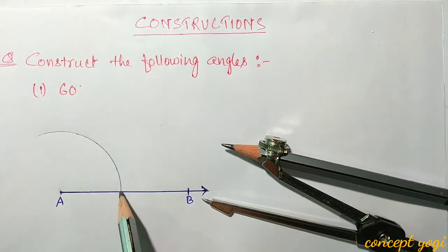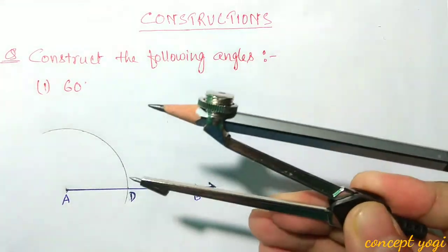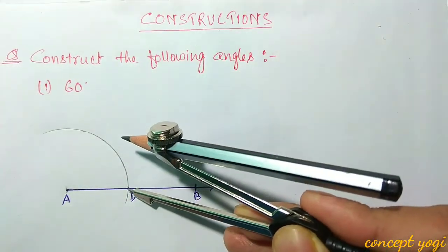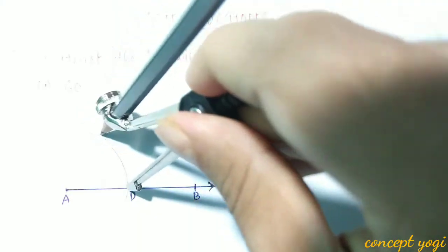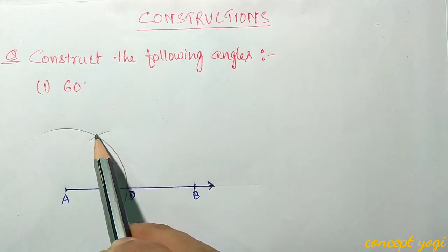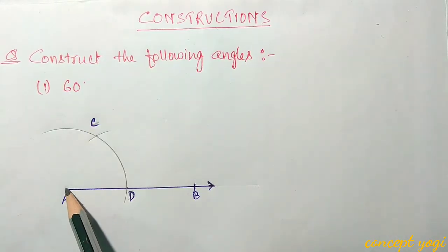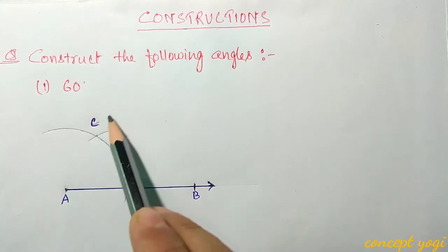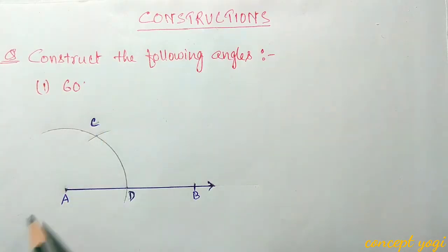You see the arc and the line segment intersect at this point — say this point is D. Now taking D as center and with the same radius, we will cut the previous arc. The two arcs cut each other at this point — say C. Now by joining point A and C we will get our 60 degree angle. We will draw a ray passing through points A and C.